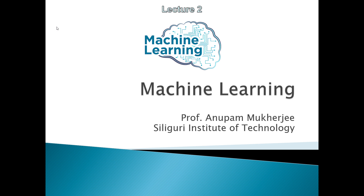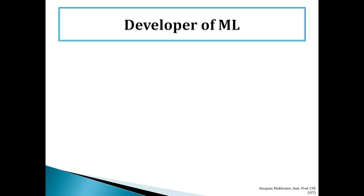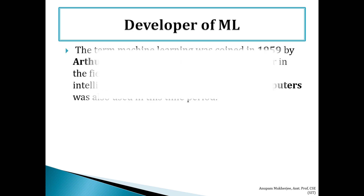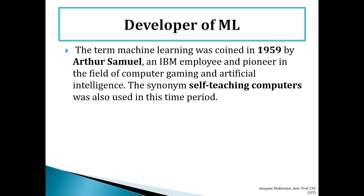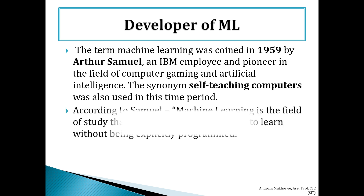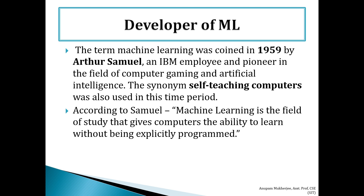We'll start our next part and in this session we'll discuss about the development of machine learning. Arthur Samuel developed machine learning in the year 1959. He was an IBM employee and pioneer in the field of computer gaming and artificial intelligence. The concept of self-teaching computers was also used in this time period.